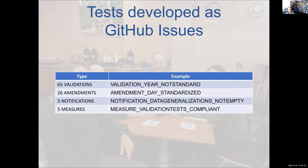The tests break down into 65 validation tests — an example would be year not standard — and 26 amendments, for example day standardized. Every one of the amendments has an equivalent validation that triggers a potential amendment. There are three notifications where we want to draw attention to a particular value — data generalizations not empty would be a classic example. And there are five measures which provide an overall summary of the results of tests on a record, though as I said this can be aggregated. An example would be validation tests that were compliant.